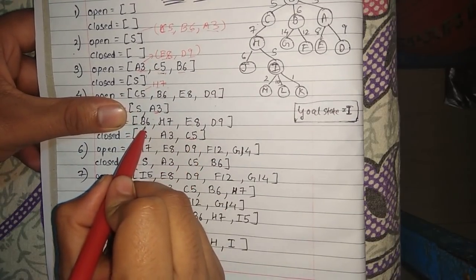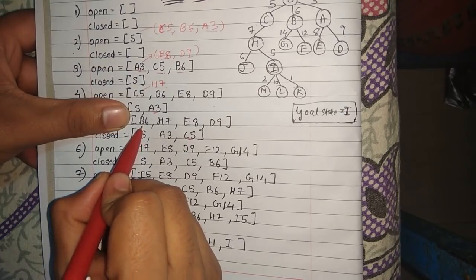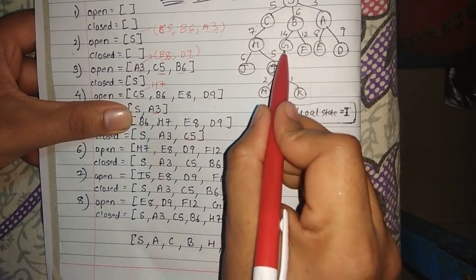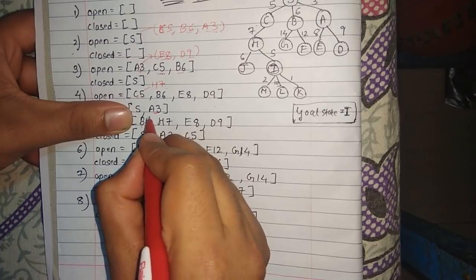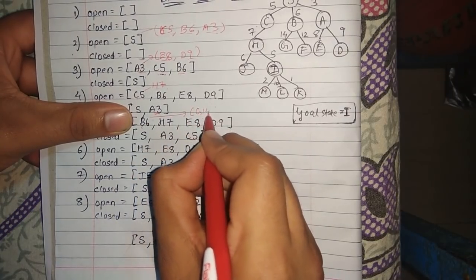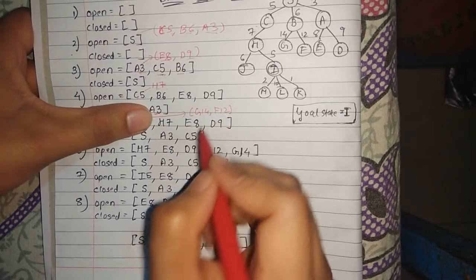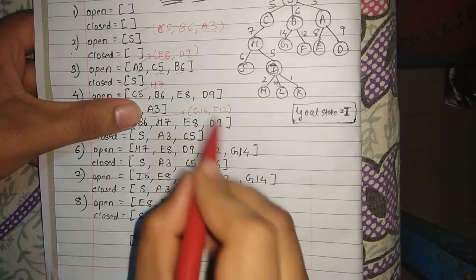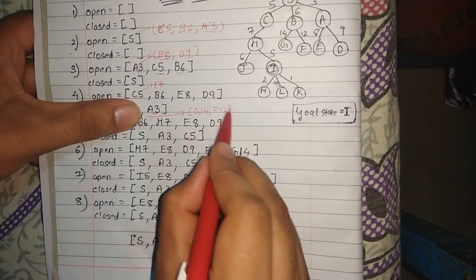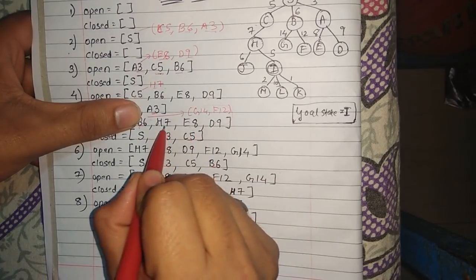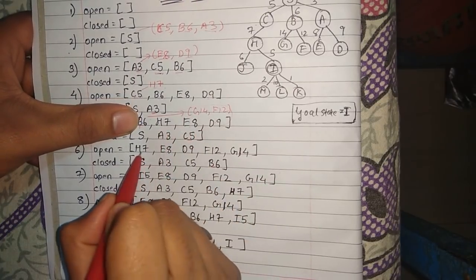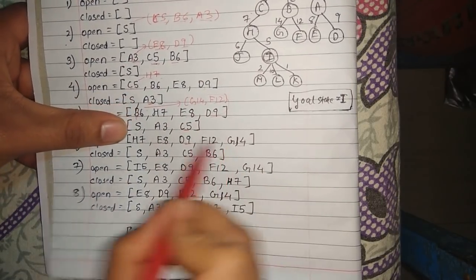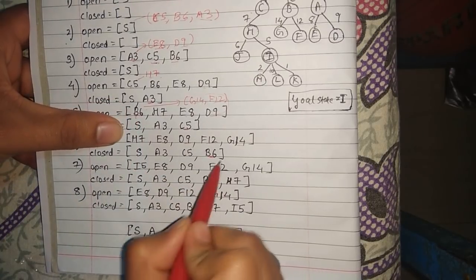Next is b6 — node b with heuristic value 6. B is not the goal state. We expand the children of b, which are g with heuristic value 14 and f with heuristic value 12. We place b into the closed array and sort the open array: h7, e8, d9, f12, g14.